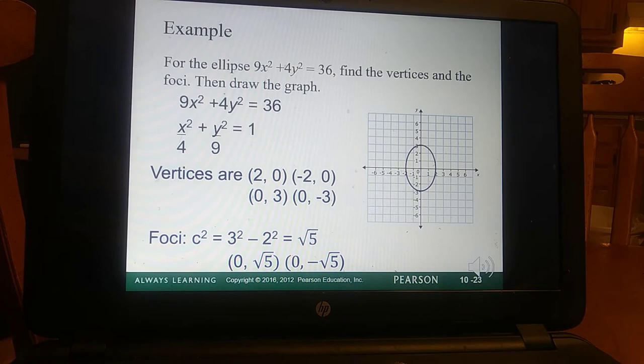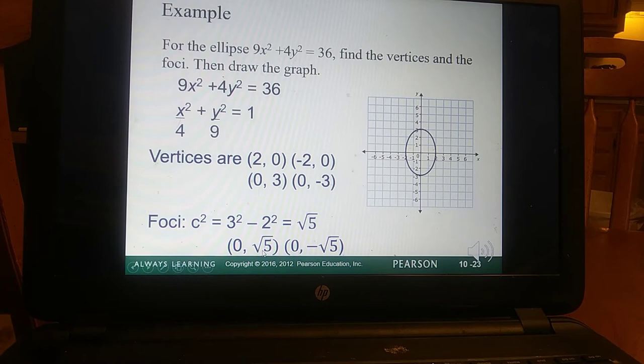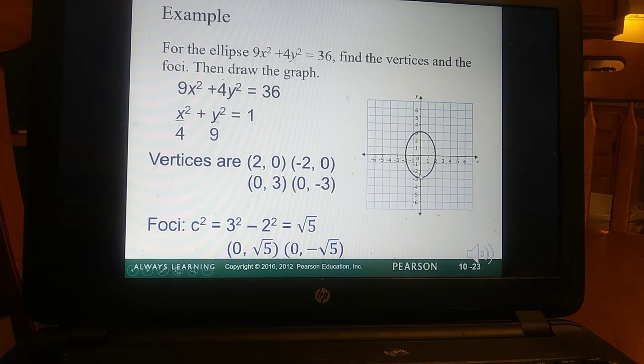And when we draw the graph, we get this. You can see that major axis falls on y, minor axis falls on x, and the foci, we're not really graphing. I mean, square root of 5, we know that's somewhere between 2 and 3. So it makes sense, because it's falling somewhere along here, and somewhere along there, if you can see where my mouse is.